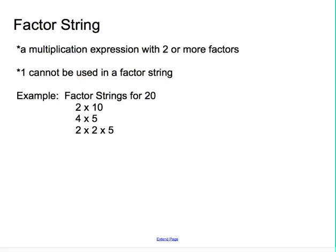If you take a look back at these factor strings for 20, the longest factor string was right here, 2 times 2 times 5. All of those factors are prime numbers. 2 is prime, 5 is prime.